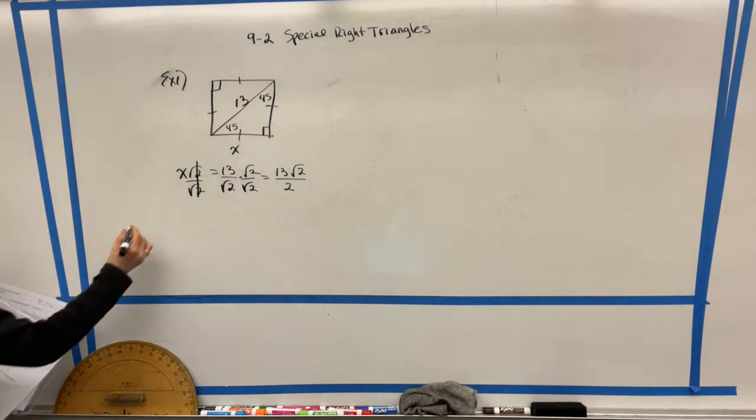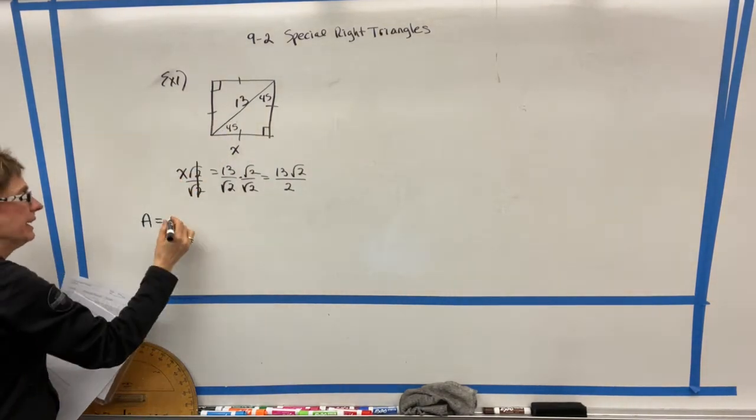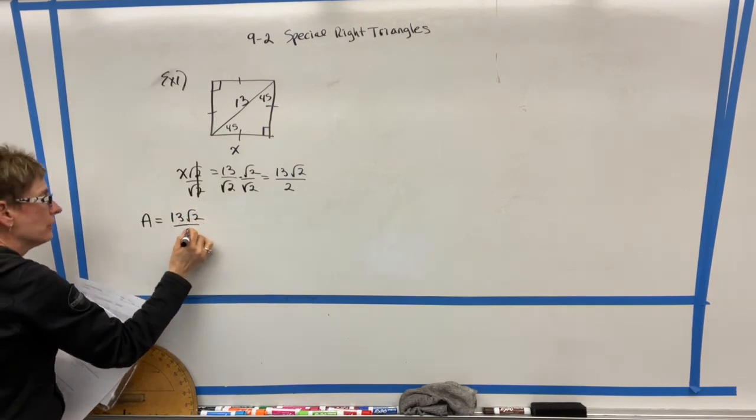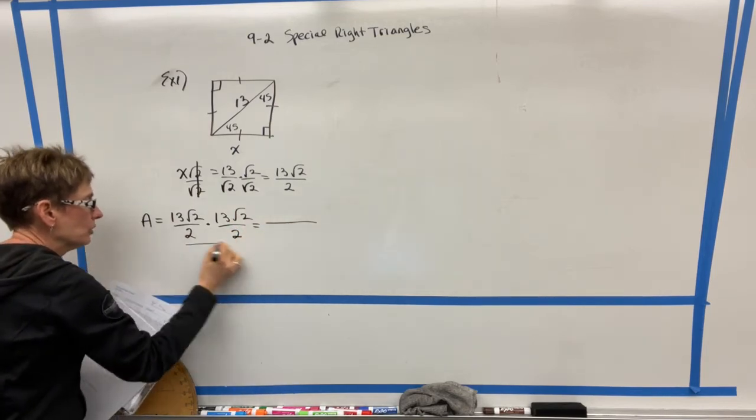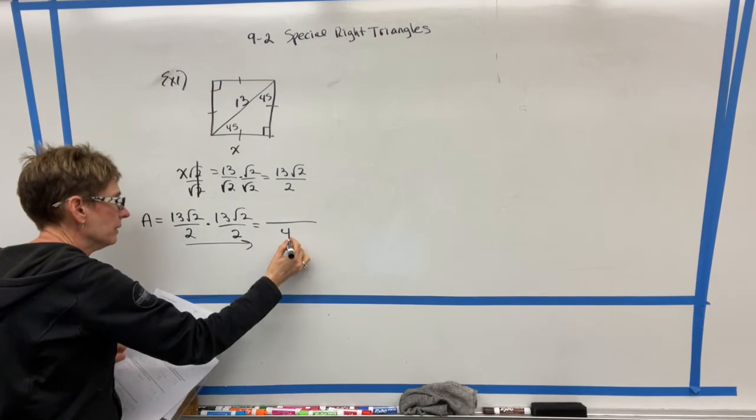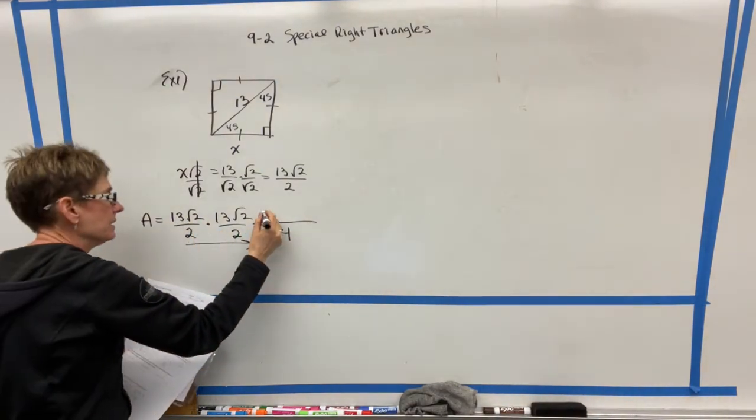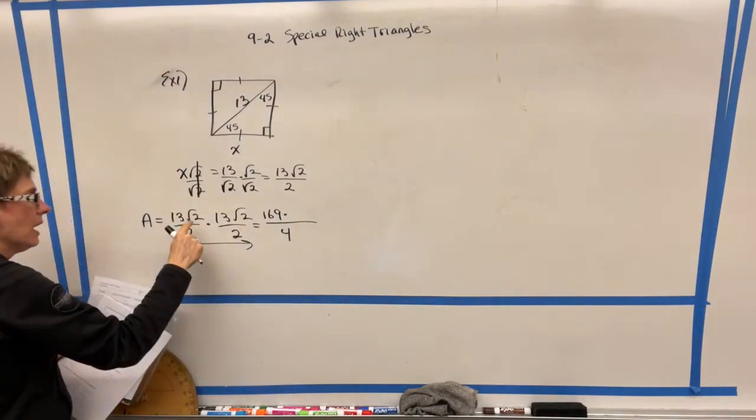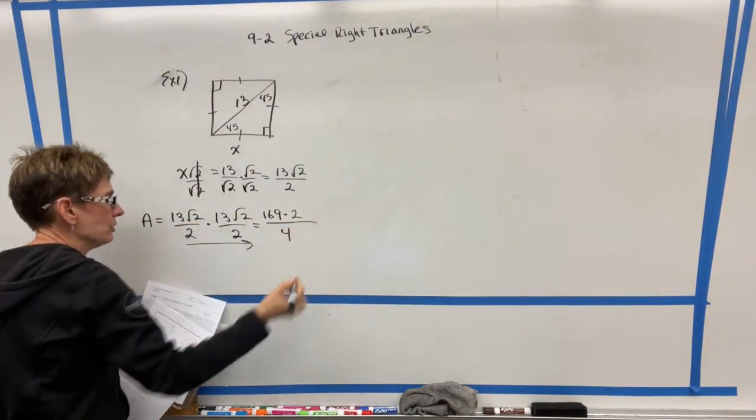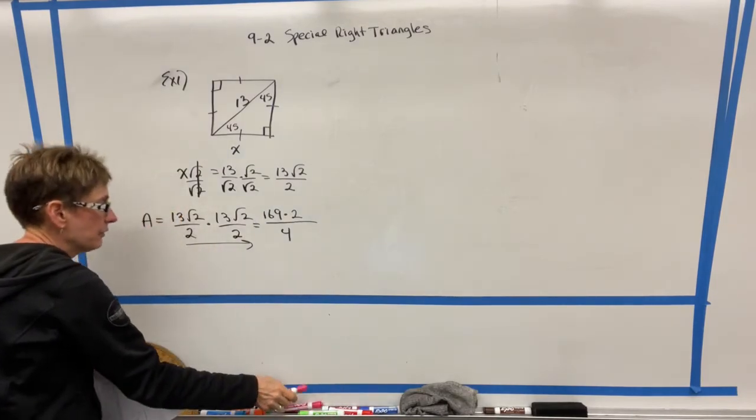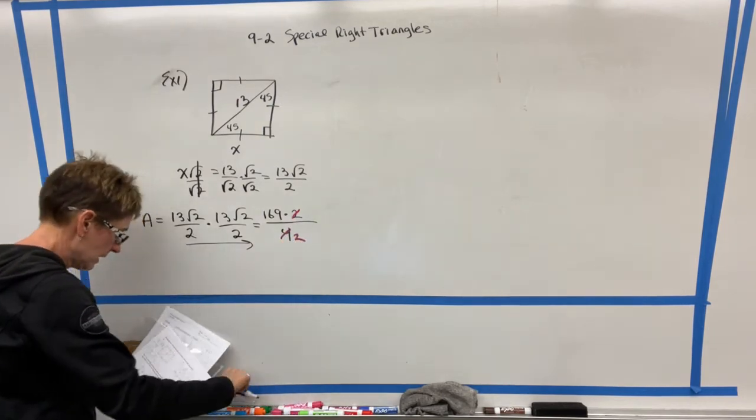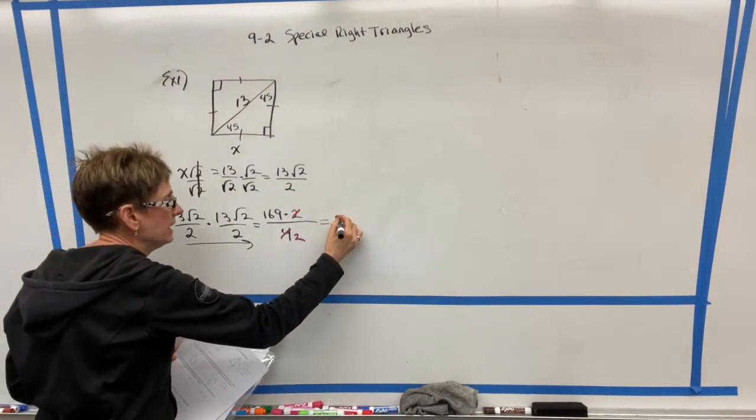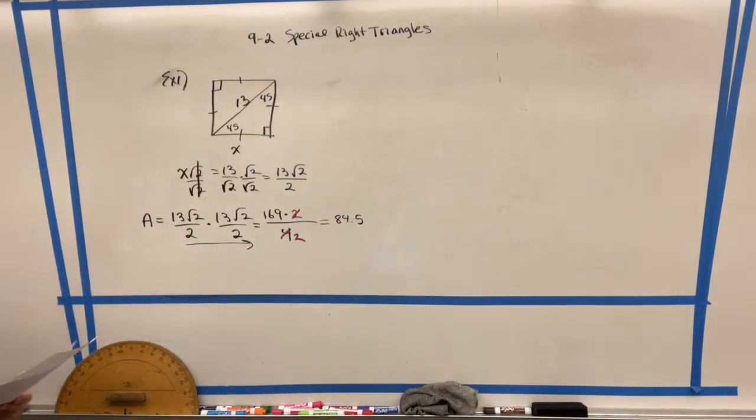Now, area means side times side. So 13 radical 2 over 2 times 13 radical 2 over 2. When I multiply across the bottom, I'm going to get 4. 13 times 13 is 169. And on the top, radical 2 times radical 2 is just 2. This fraction here can be reduced. I can divide the top by 2 and the bottom by 2. And the area ends up being 84.5. So that would be how we would find the area of that figure.